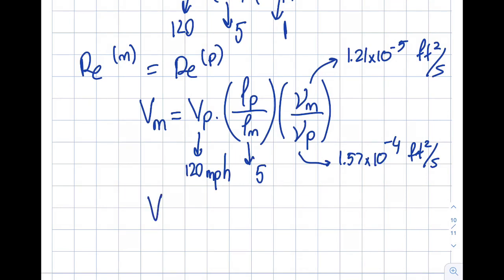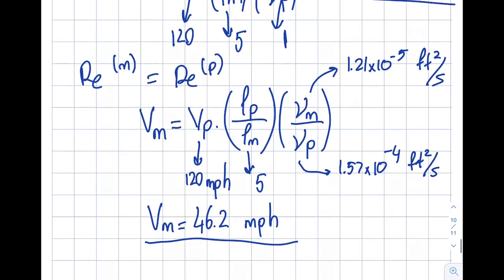So using a water tunnel, I obtain 46 miles per hour, compared to 600 miles per hour for the wind tunnel.